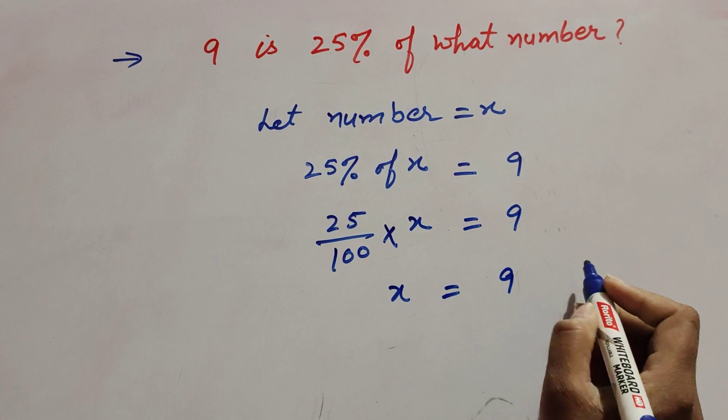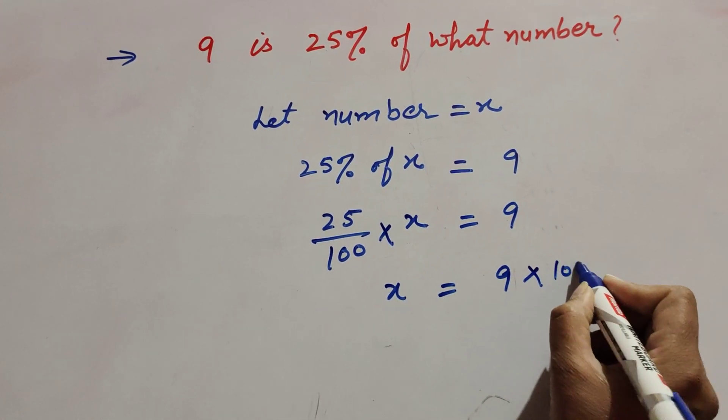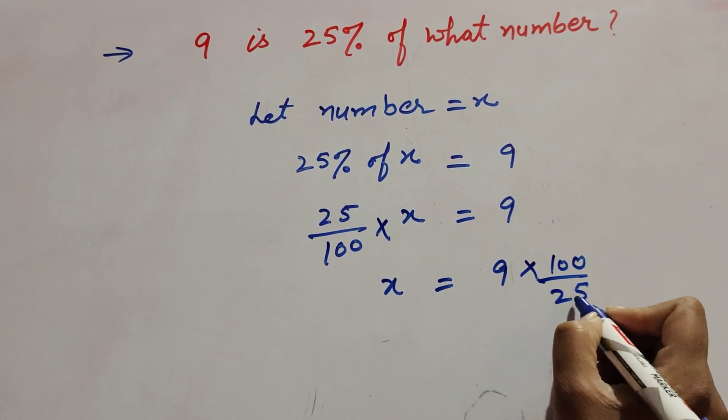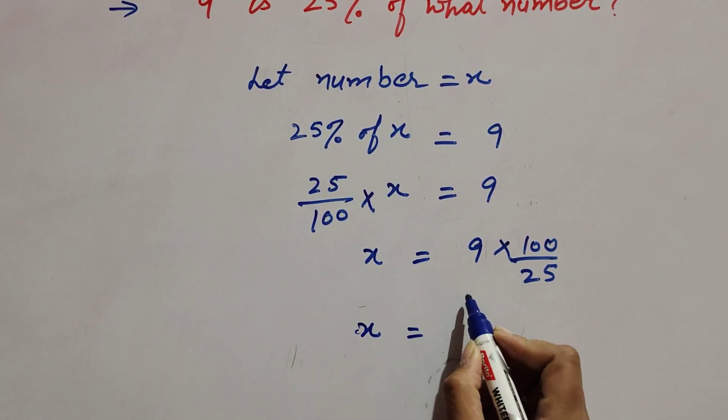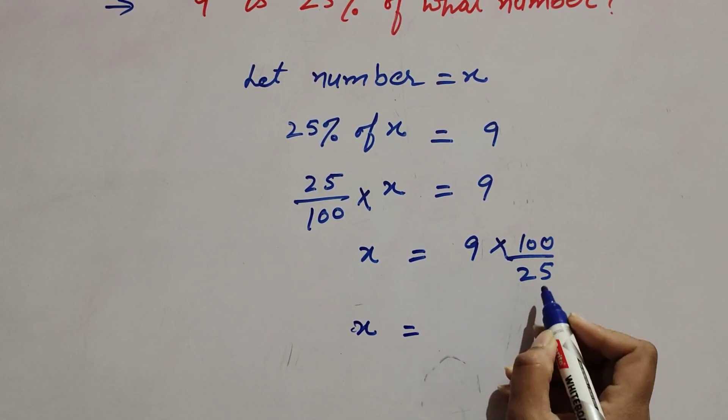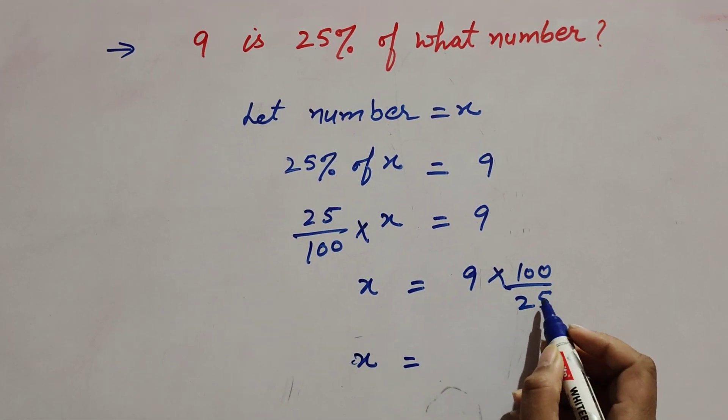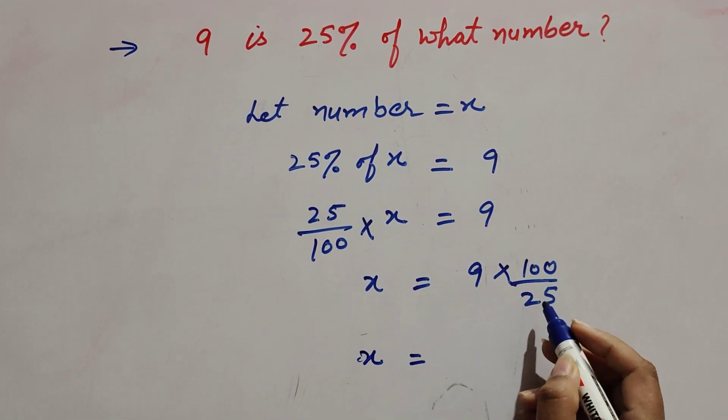When we transpose this term to right hand side, we take its reciprocal. It is multiplied by 100 over 25. So x is equal to 9 multiply 100 over 25.